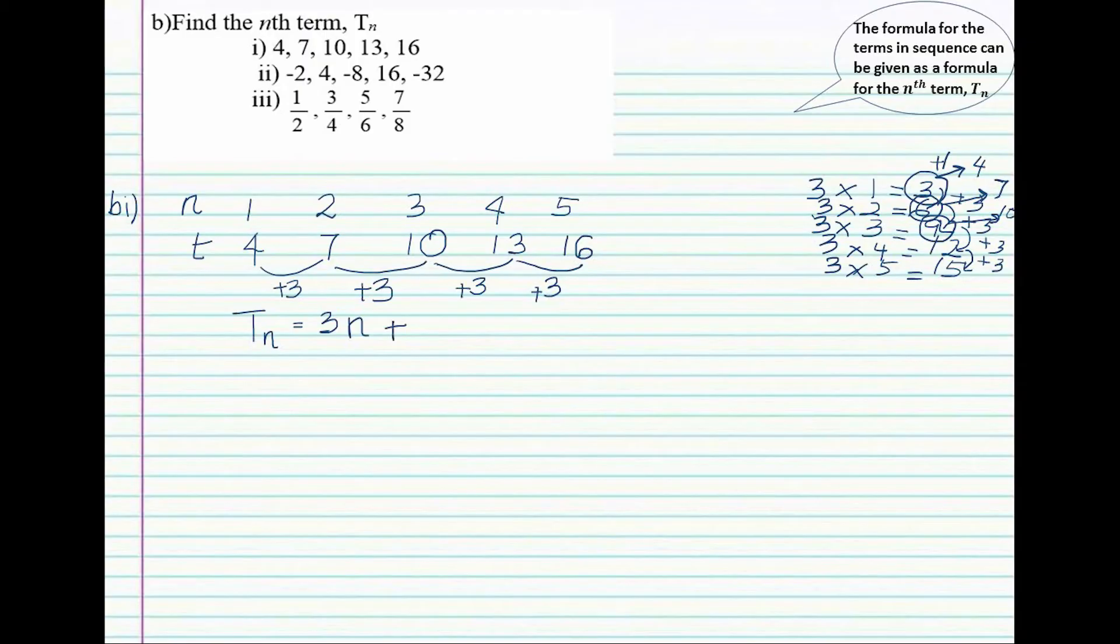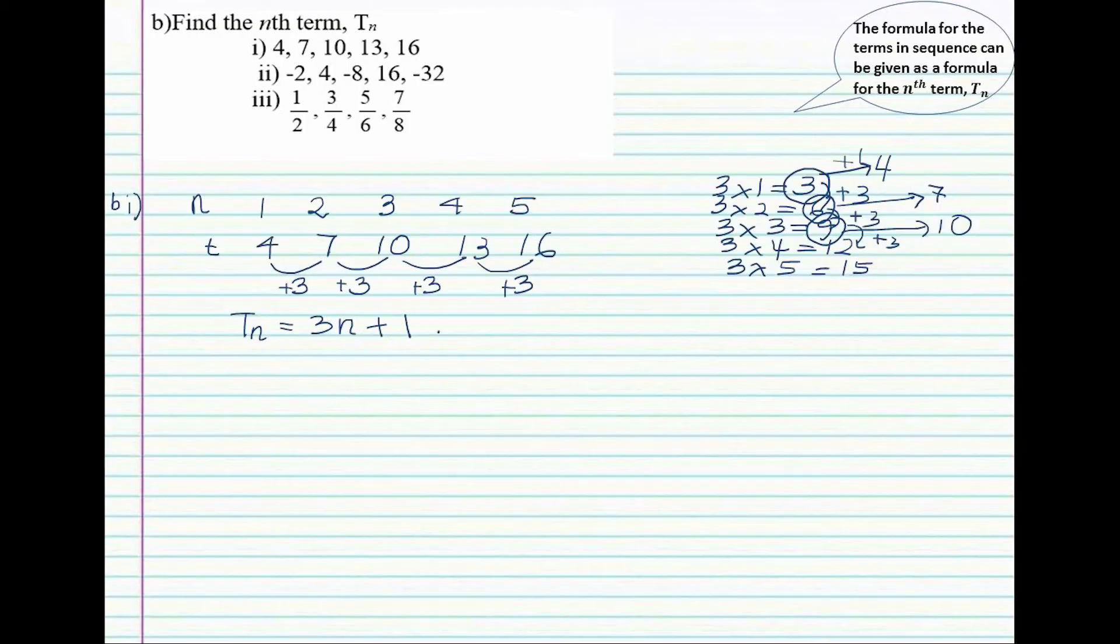We can check our formula. If we check for any value, let's say I choose n equals 4, it becomes 3 times 4 equals 12, 12 plus 1 is 13, so we will get the fourth term and that will give us the correct answer. Second example we have negative 2, 4, negative 8, 16, and negative 32.